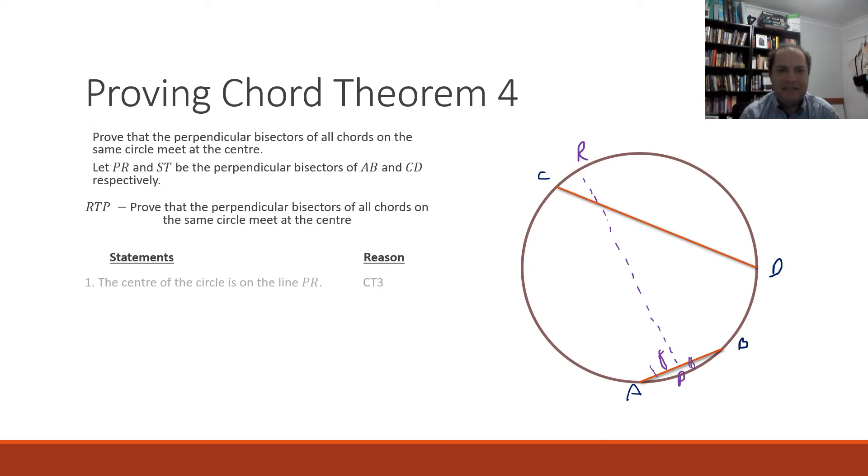We'll just start with that one and get into our proof. So we've got our statements and our reason table. Now the first thing we can say is that the center of our circle must be on that line. Or how do we know that?